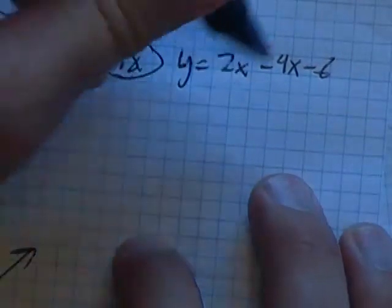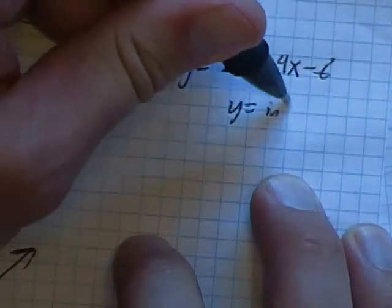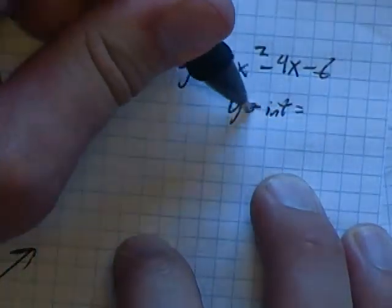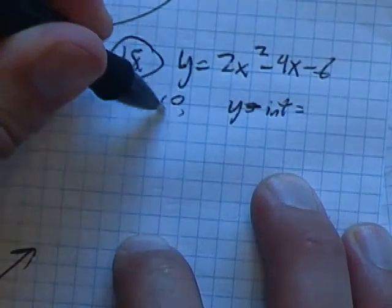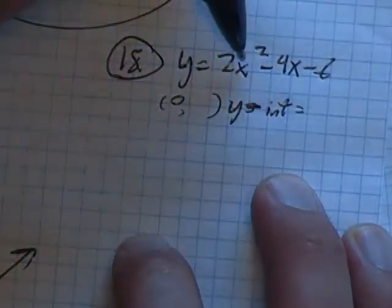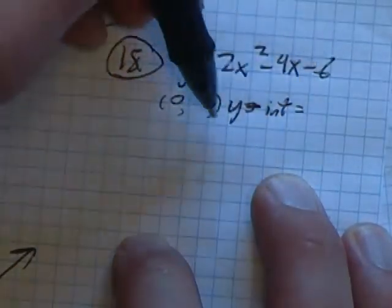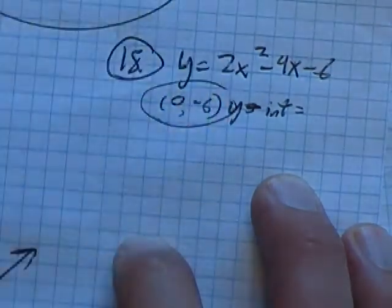So I think I'll start with the y-intercept, that's the easy one. The y-intercept is when x is zero, what's y, and when x is zero that's gone, y is negative six. So there's my y-intercept right there.